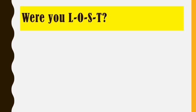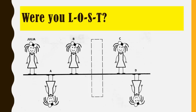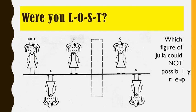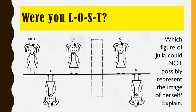If this is the given diagram, and this is supposedly a lens, Julia is our object in front of this lens. The question is: which figure of Julia could not possibly represent the image of herself? Try to explain in the comment section.